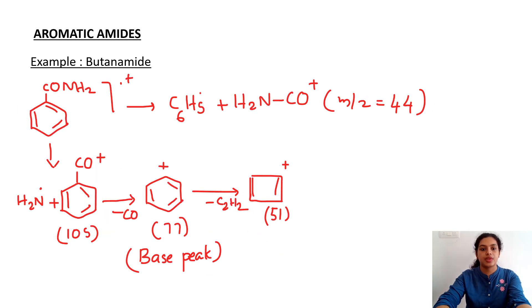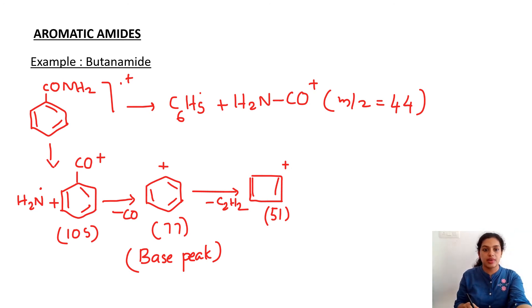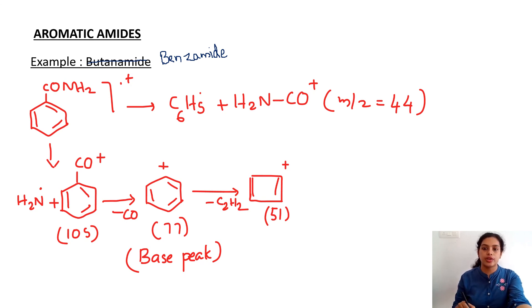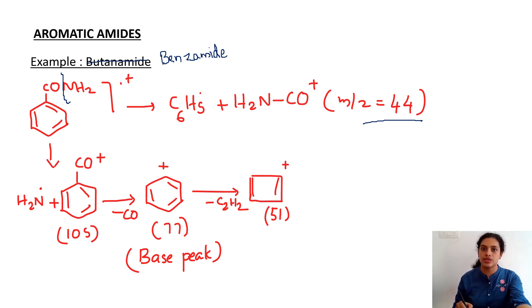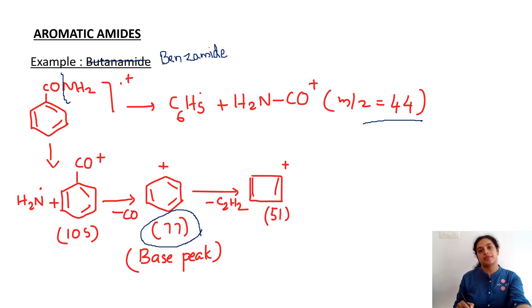The last example is an aromatic amide — benzamide. The m/z = 44 peak is familiar. The difference in aromatic amides is that NH2 dot is eliminated; the bond breaks to give NH2 dot and CO+, which gives m/z = 77 and eventually m/z = 51. Notably, the base peak here is not at m/z = 105 but instead at m/z = 77.